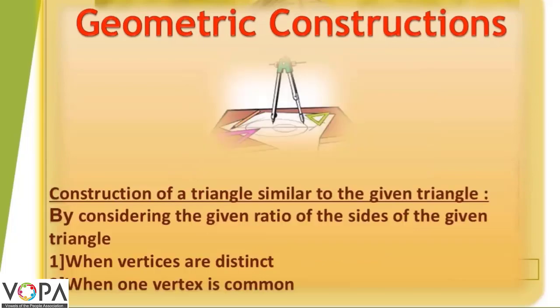The construction of these two similar triangles are explained by two different methods. By considering the given ratio of the sides of the given triangle, first, when vertices are distinct, second, when one vertex is common in given two triangles.